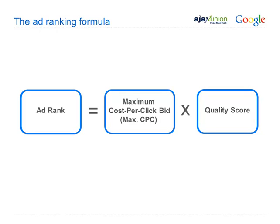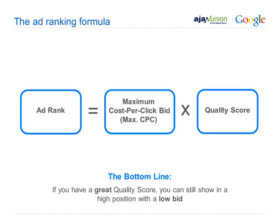Ad rank equals your maximum cost-per-click bid — we call that CPC — multiplied by your quality score. The bottom line is that if you have a great quality score, you can still show in a high position with a low bid. Your bid could be lower because it's not only about the bid, it's also about your quality score. So your ad rank and position can be higher even with a lower bid if your quality score is strong.